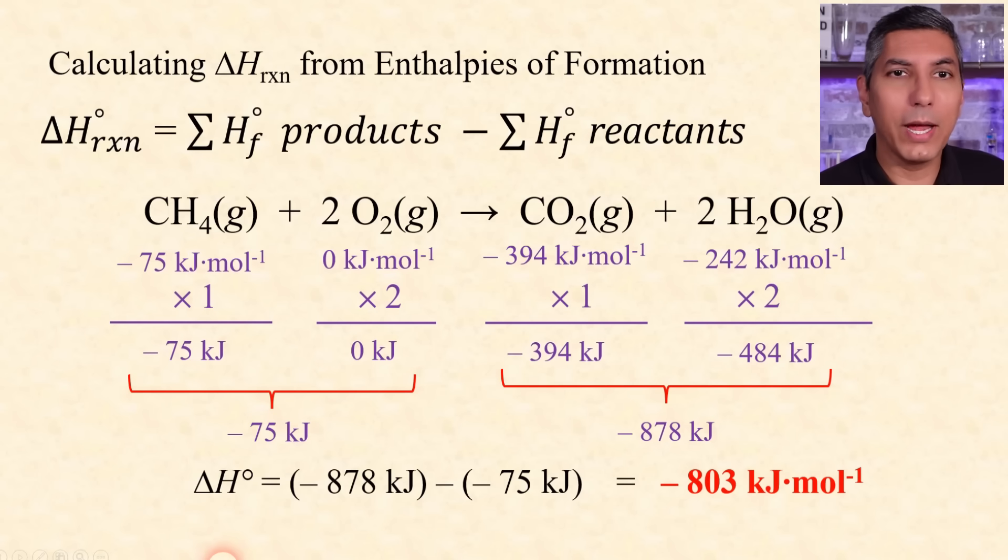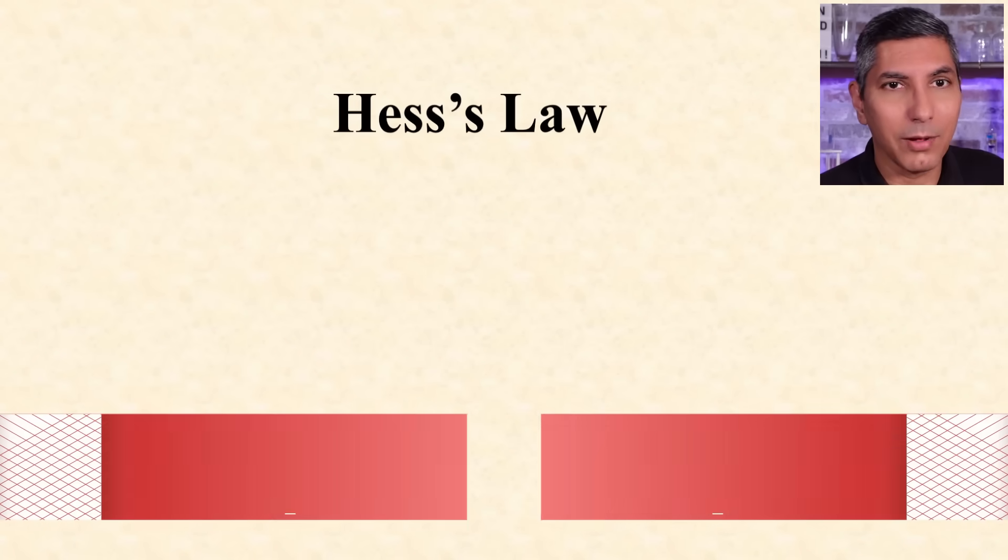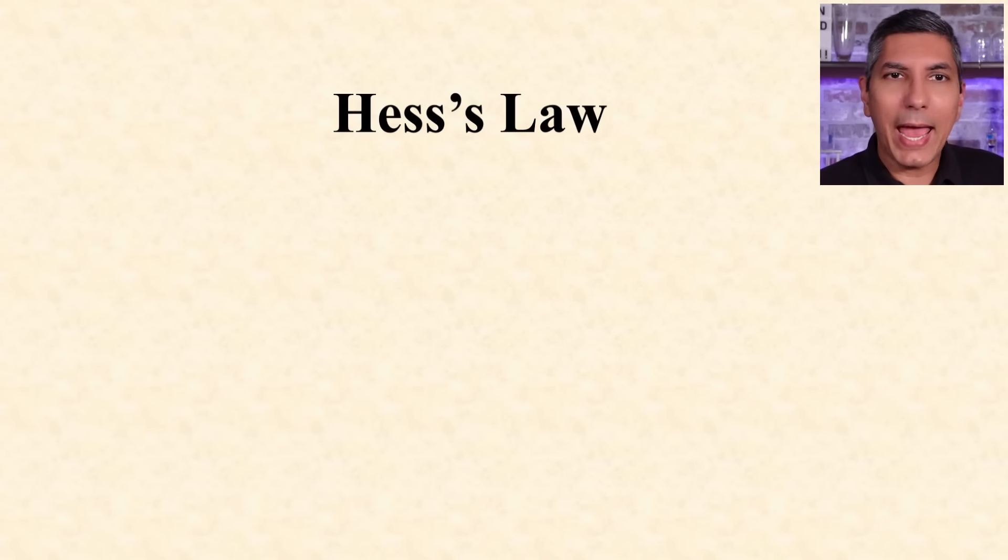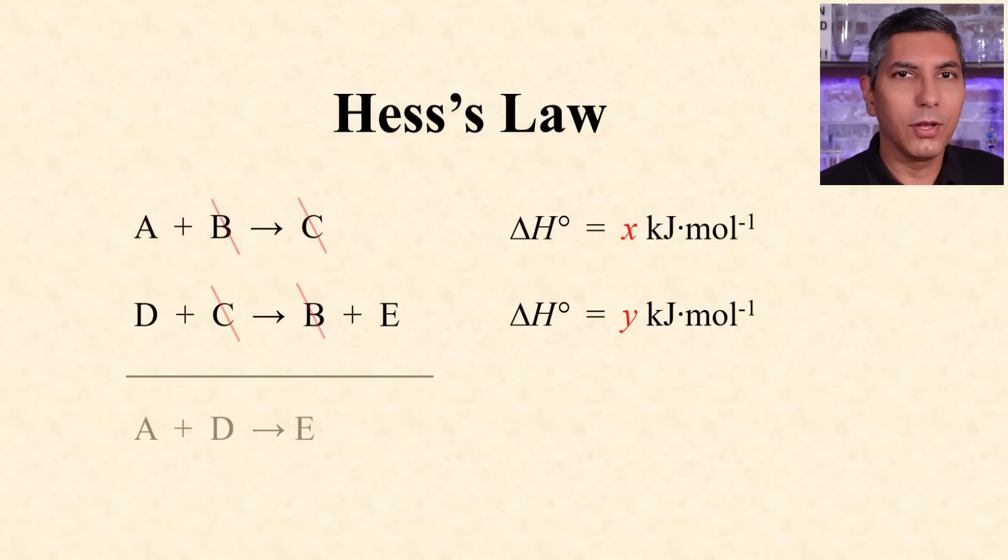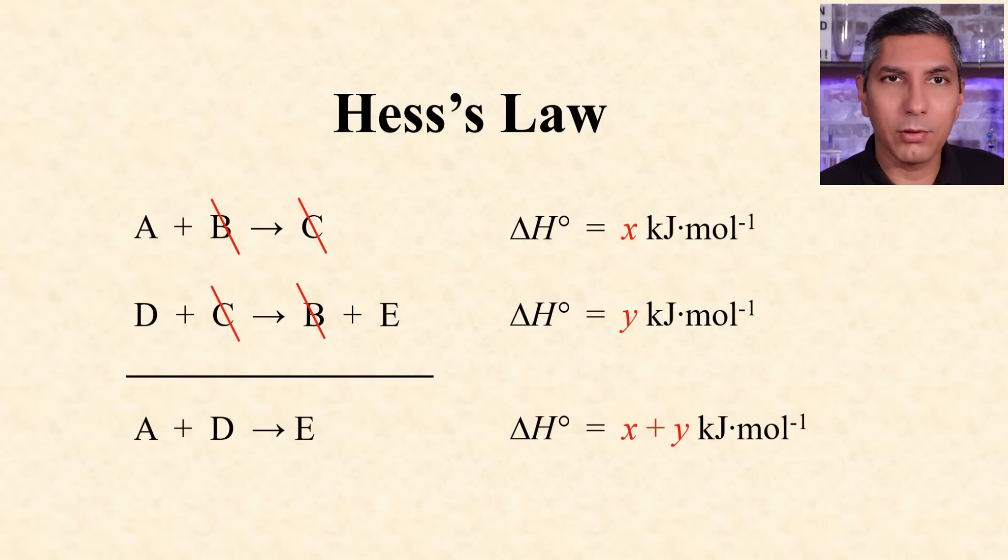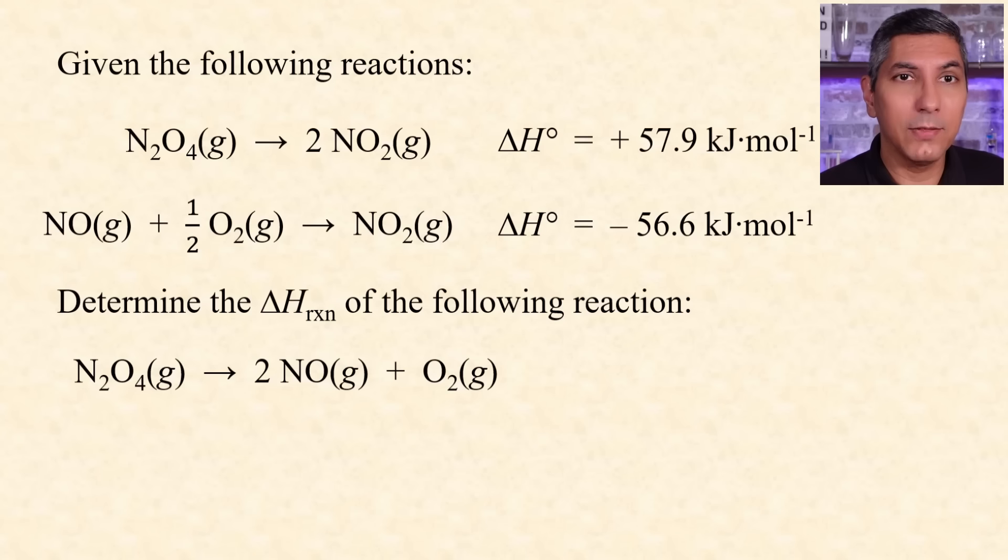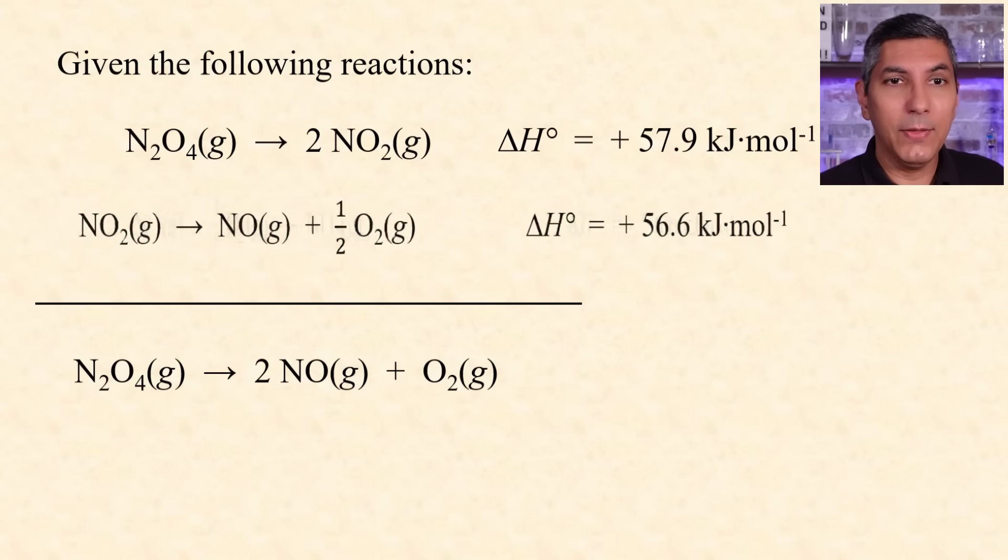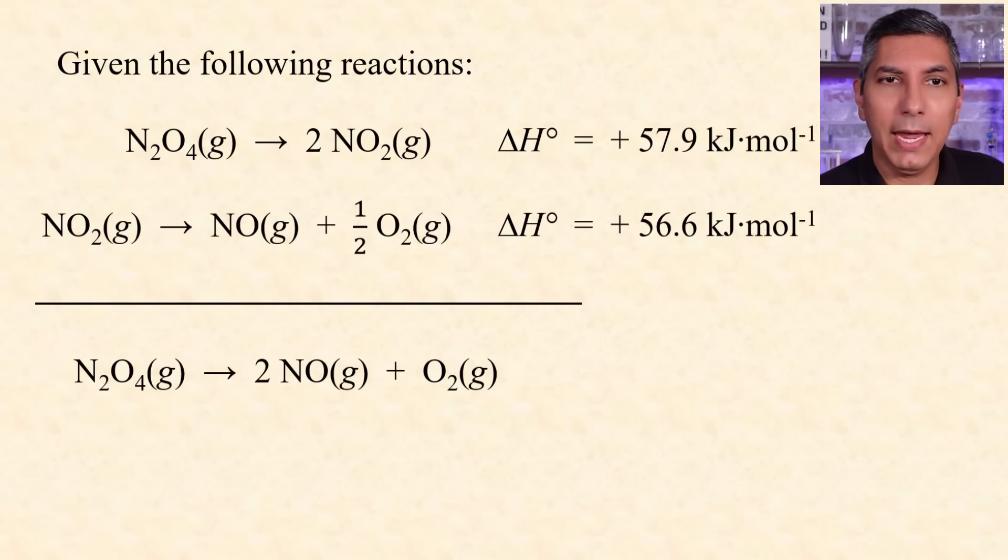The last way to solve for delta H is to use Hess's law. The idea here is that if two reactions add up to give you a new reaction, those two individual delta H's will add up to give the delta H of the new reaction. Sometimes you need to flip around reactions and multiply reactions to make them add up, like in this example. Here we have to flip around reaction number two and that changes the sign of its delta H.